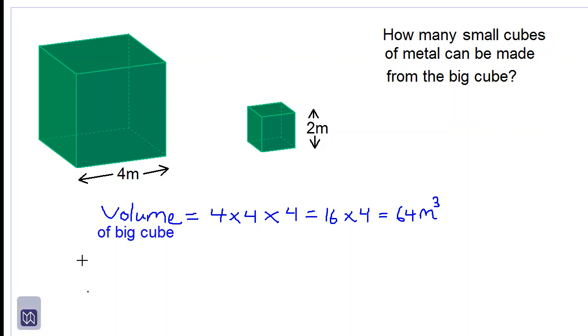Let's get the volume of the small cube. We will take the length of the side which is 2 meters, 2 times 2 times 2. 2 times 2 is 4 times 2 is 8 meter cubed again. The unit of volume is meter cubed.